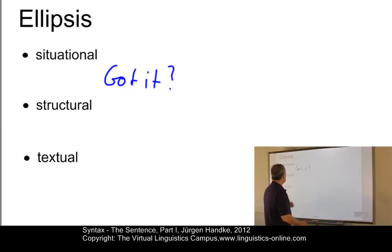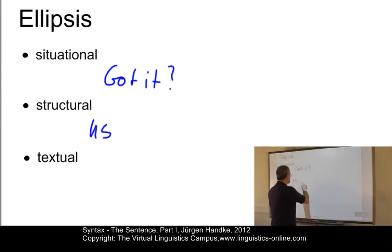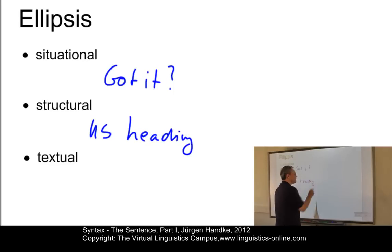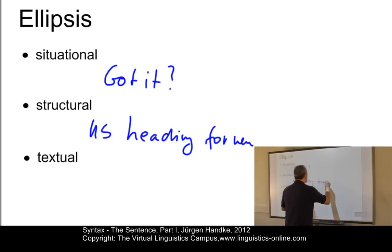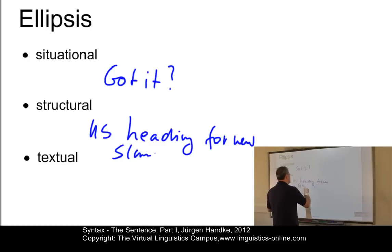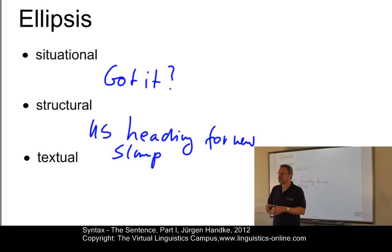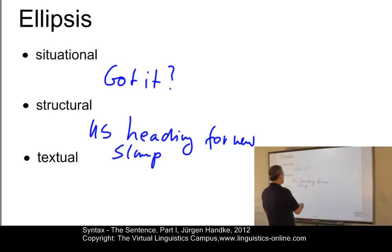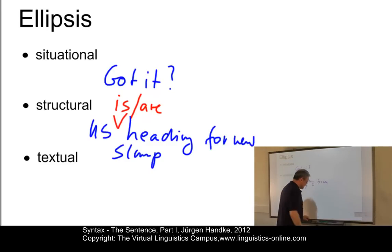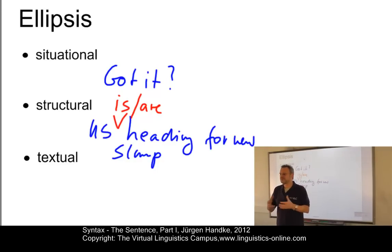The second type is often used in headlines. A typical newspaper headline might read: "U.S. heading for new slump." This sort of block language used in headlines is referred to as structural ellipsis, where the interpretation depends on knowledge of the grammatical structure. The element that is missing here is certainly "is" or "are," depending on how you define "the United States" as singular or plural. So here the verb is missing.